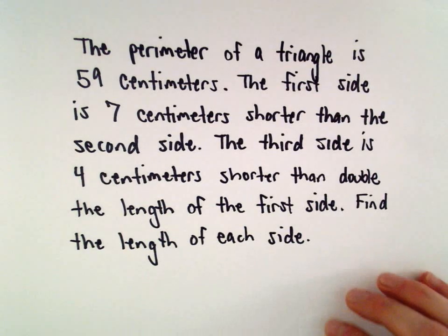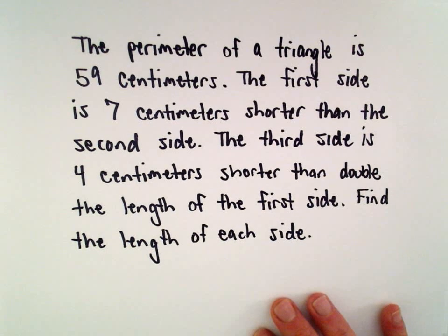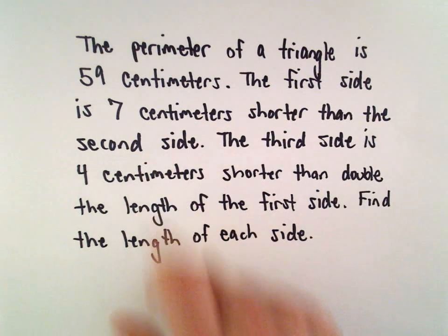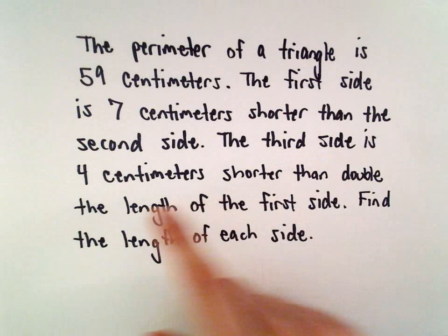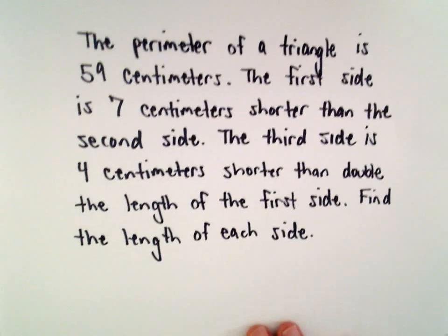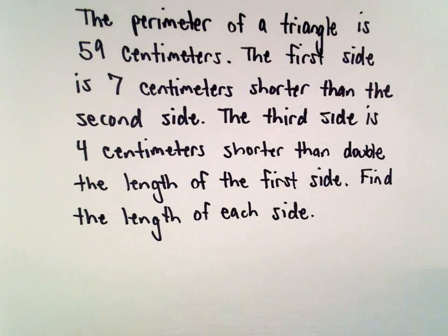Okay, suppose the perimeter of a triangle is 59 centimeters. The first side is going to be 7 centimeters shorter than the second side, and the third side is going to be 4 centimeters shorter than double the length of the first side. We want to find the length of each side.